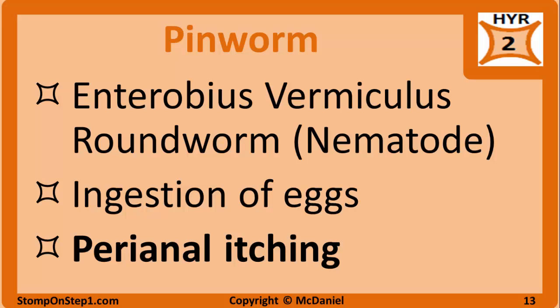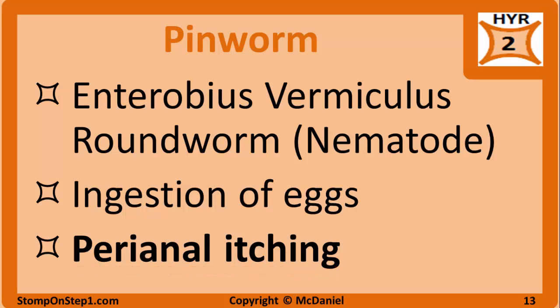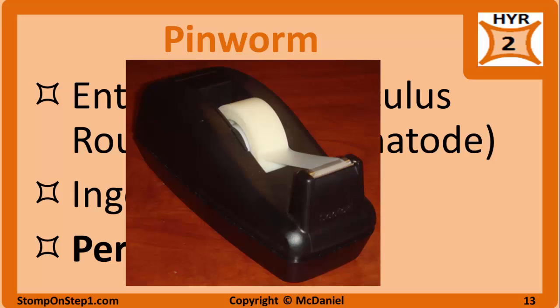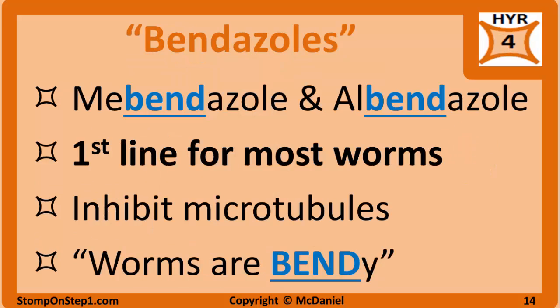Most helminths or worms are not covered in depth since they are relatively low-yield. However, a couple of key topics are worth noting. Pinworm, aka Enterobius vermicularis, is a type of roundworm or nematode. Infection occurs through the ingestion of eggs in food. It is the most common helminth infection in the US and is primarily seen in children. Patients are asymptomatic except for severe perianal itching, caused when the worms migrate at night and deposit eggs outside the anus. Diagnosis is made by the cellophane tape test — a piece of clear adhesive tape applied to the perianal area and examined microscopically for eggs or adult worms.